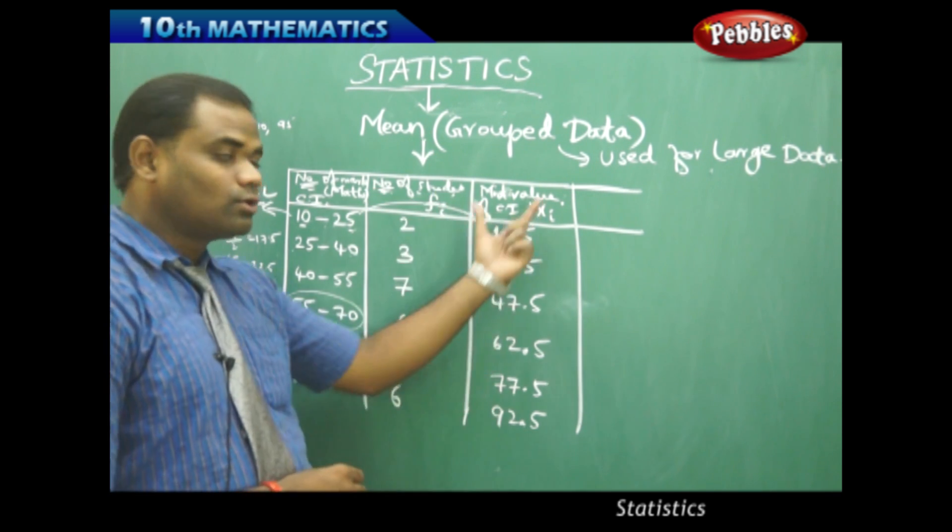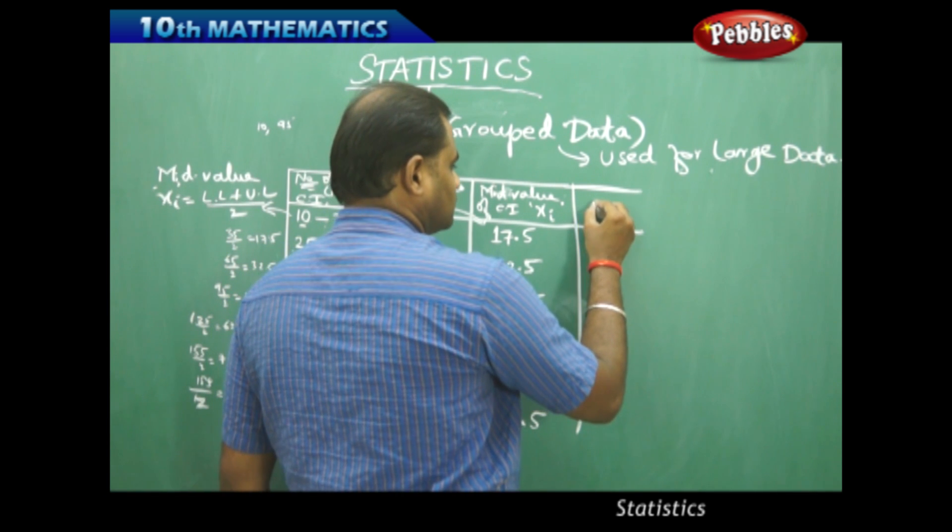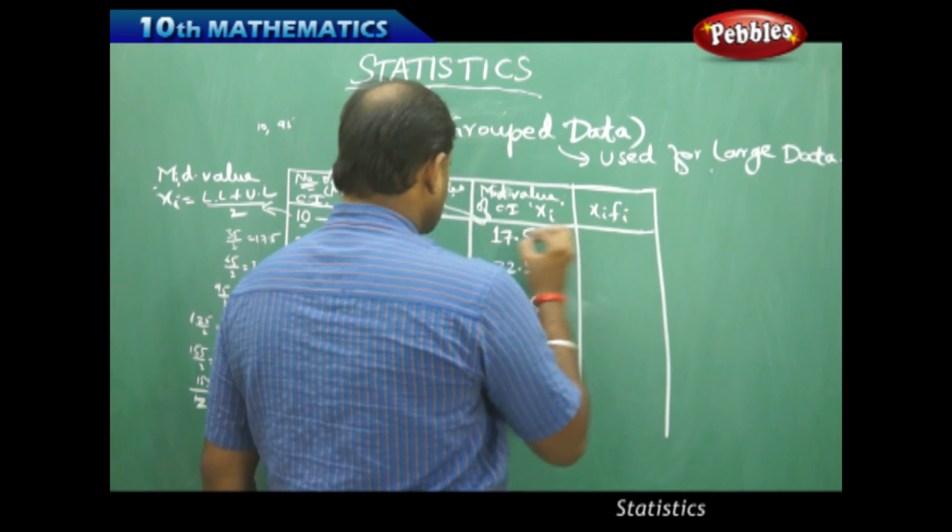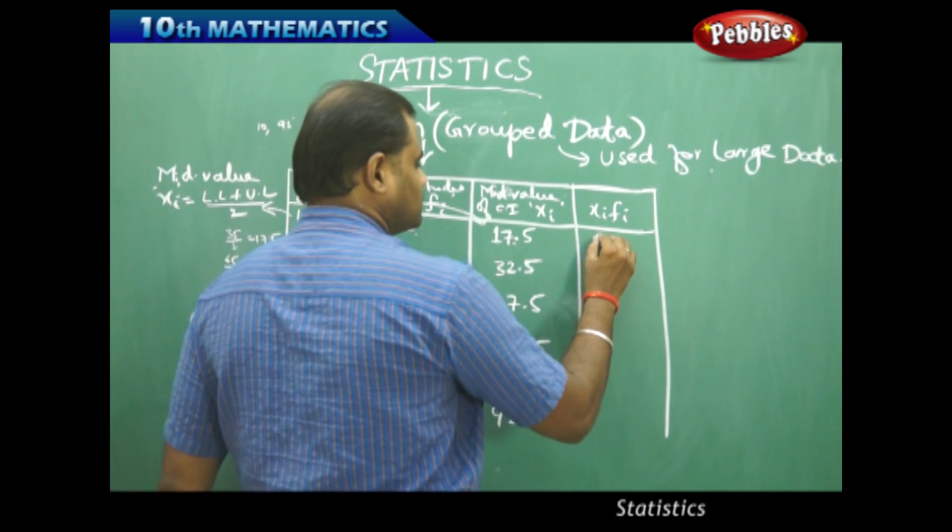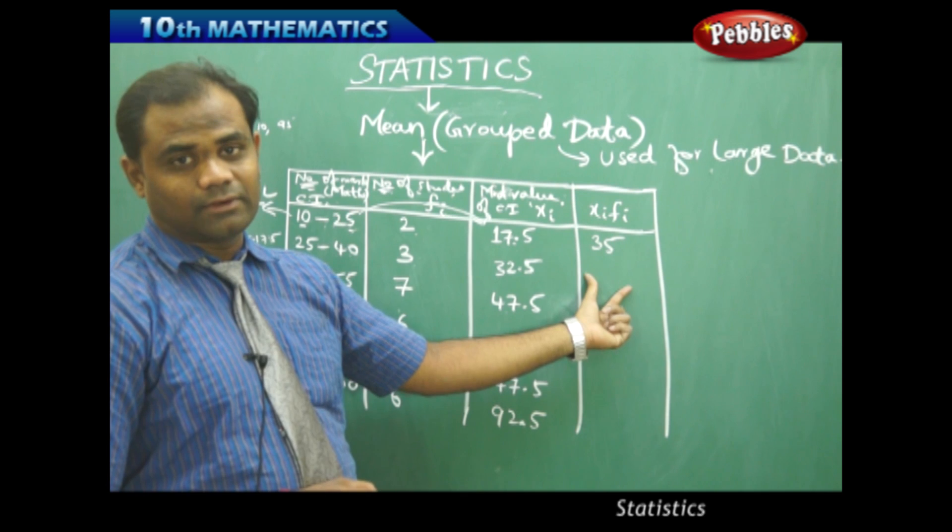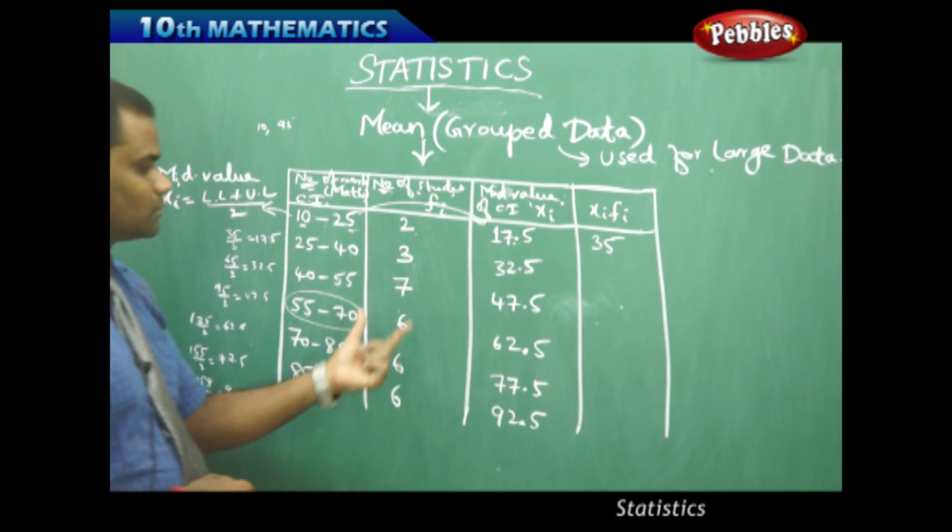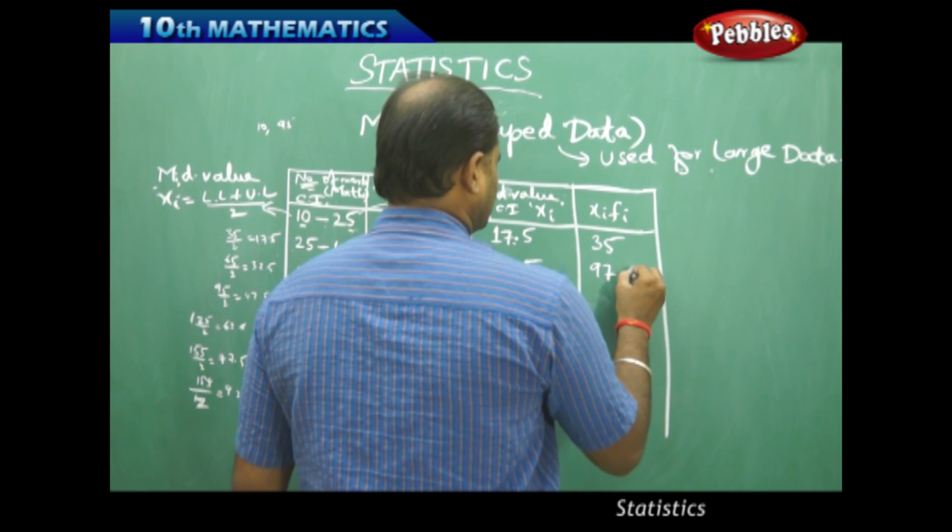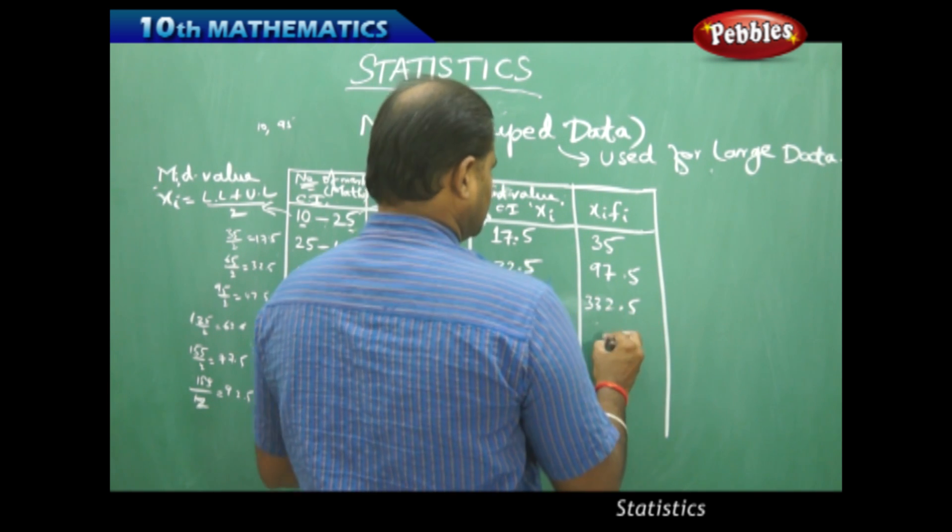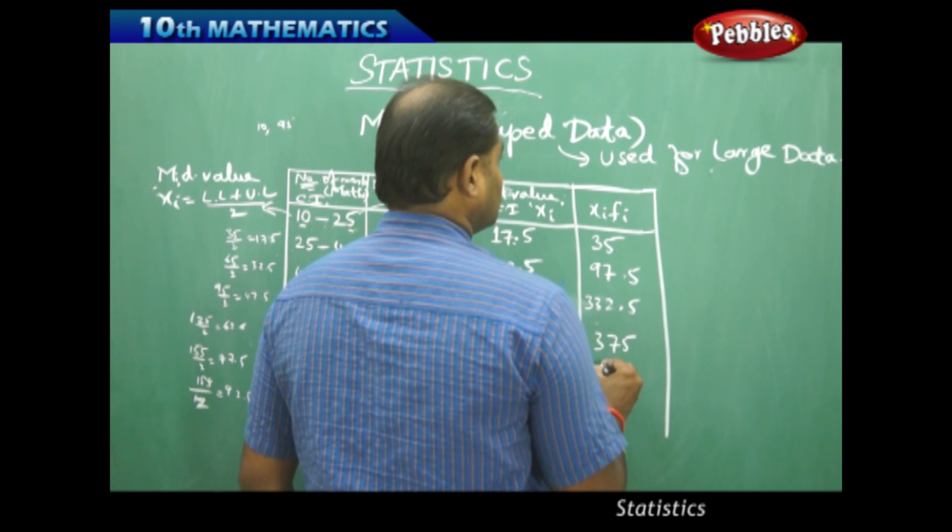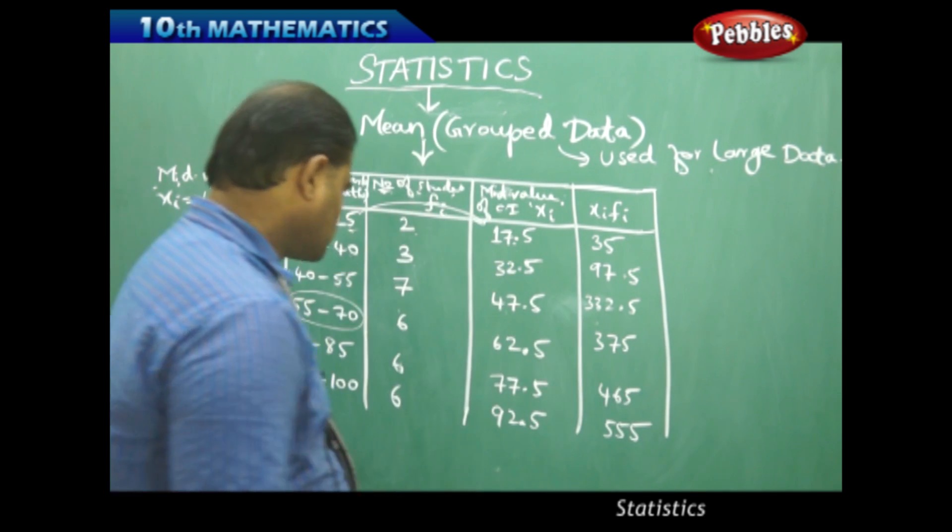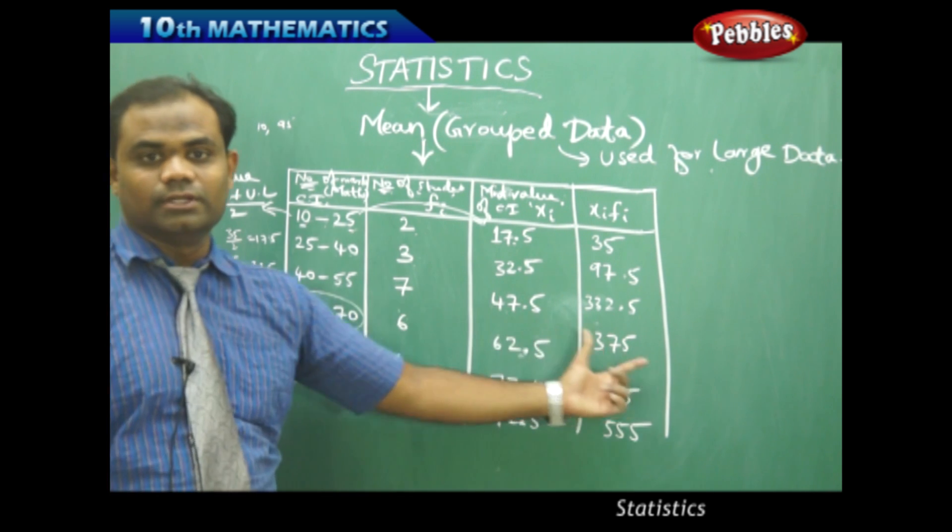Now I know my fi and I know my xi. It is a similar process where I need to find xi into fi and then multiply to get the values. So I multiply 2 times 17.5 and then I get this to be 35. Similarly this into this gives me the next xi fi for the class interval 25 to 40. So 3 times of this being 97.5. Similarly 7 times this is 332.5 and then 375, 465 and the final xi fi is what I get when I just multiply this with this for the respective rows.